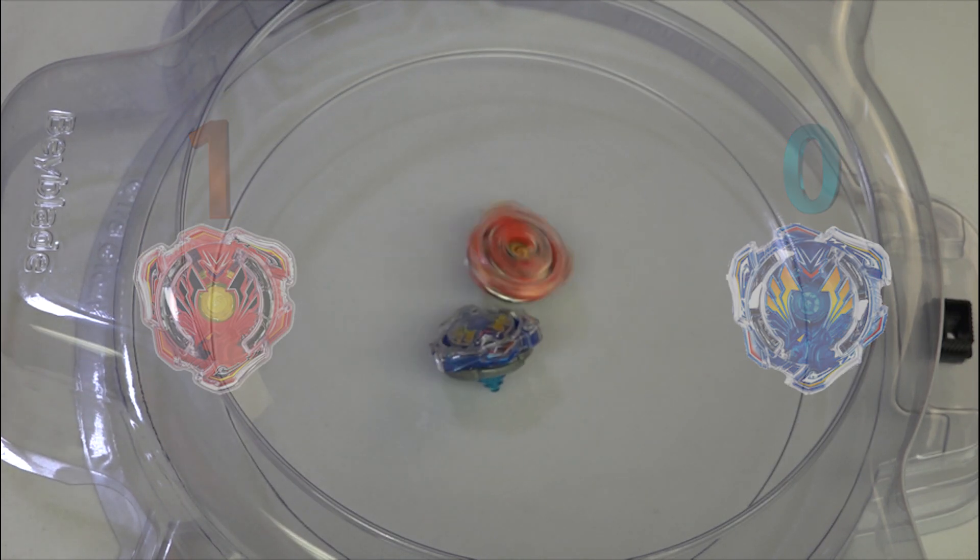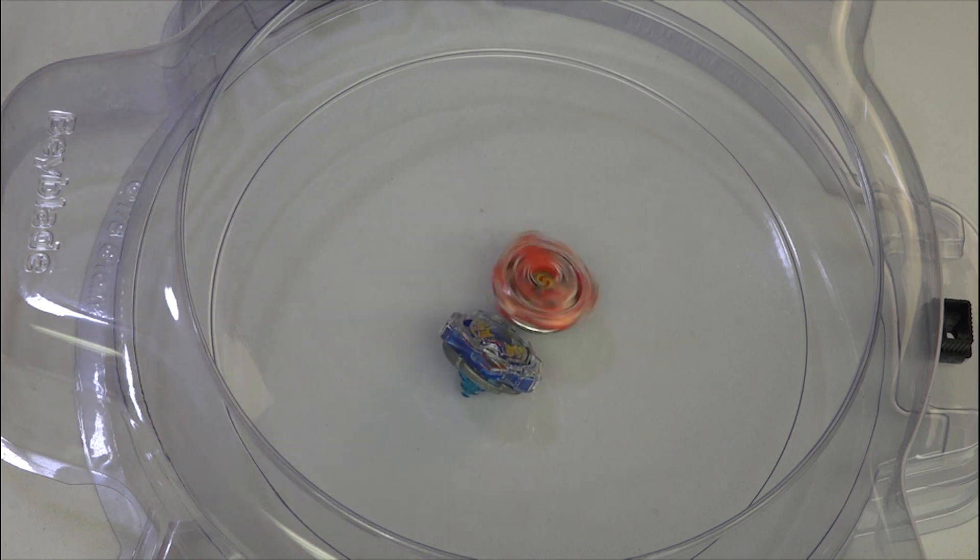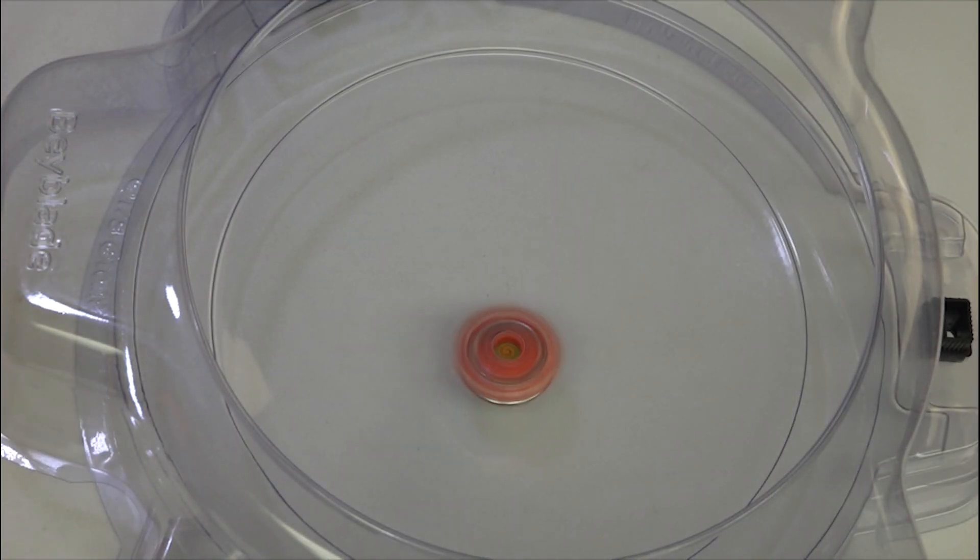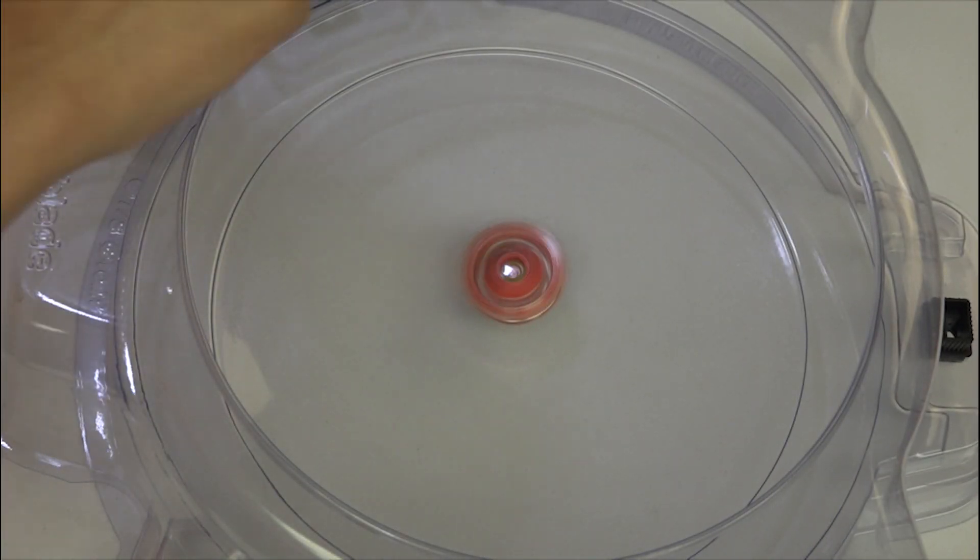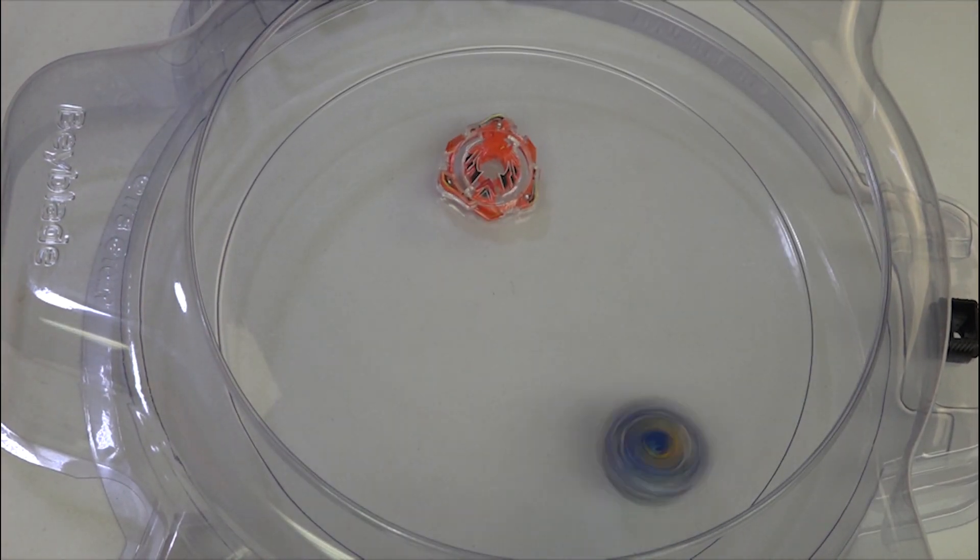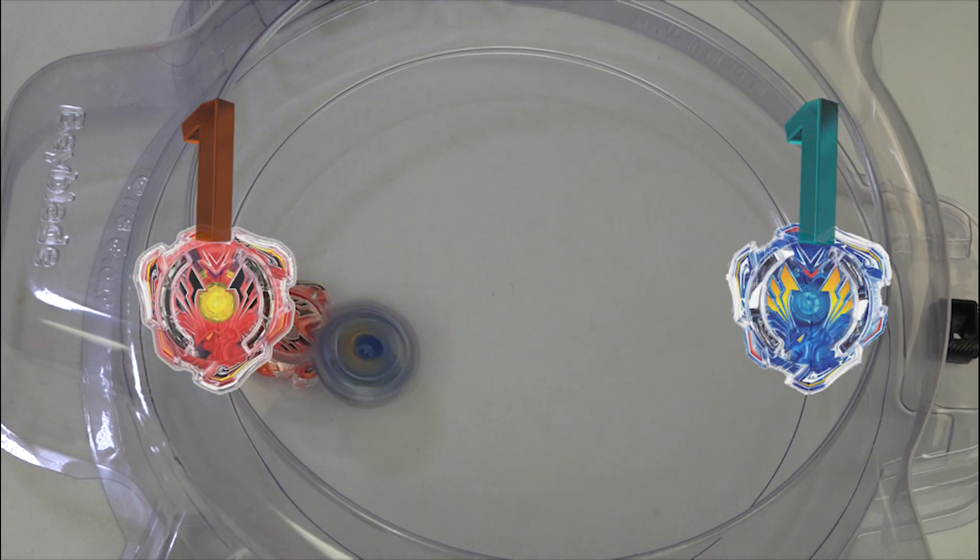And Valkyrie Spread Survive wins! Score of one point to zero points. Not today, because my Valkyrie is invincible! Okay! Now we have one point to one point.